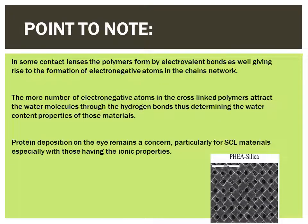It is important to note that other than covalent bonds, there are contact lenses where the polymers get formed by electrovalent bonds as well. An electrovalent bond is where the valence electron from one atom is permanently transferred to another atom. As a result, electronegative atoms are formed in the network of those polymer chains. The more electronegative atoms there are in the cross-linked polymers, they will attract more water molecules through hydrogen bonds, and thus that will determine the water content property of those materials.